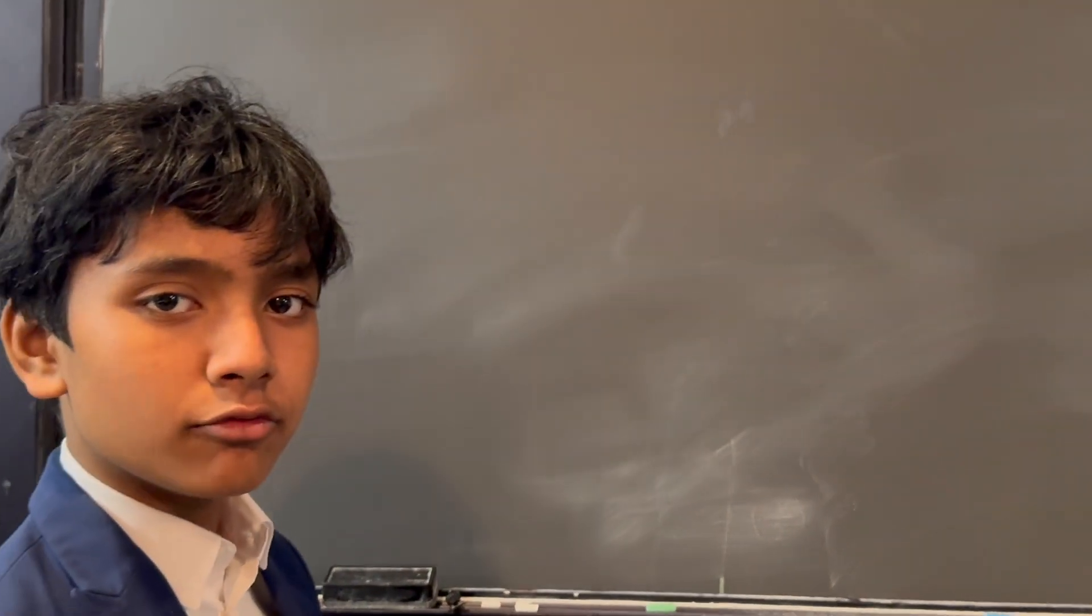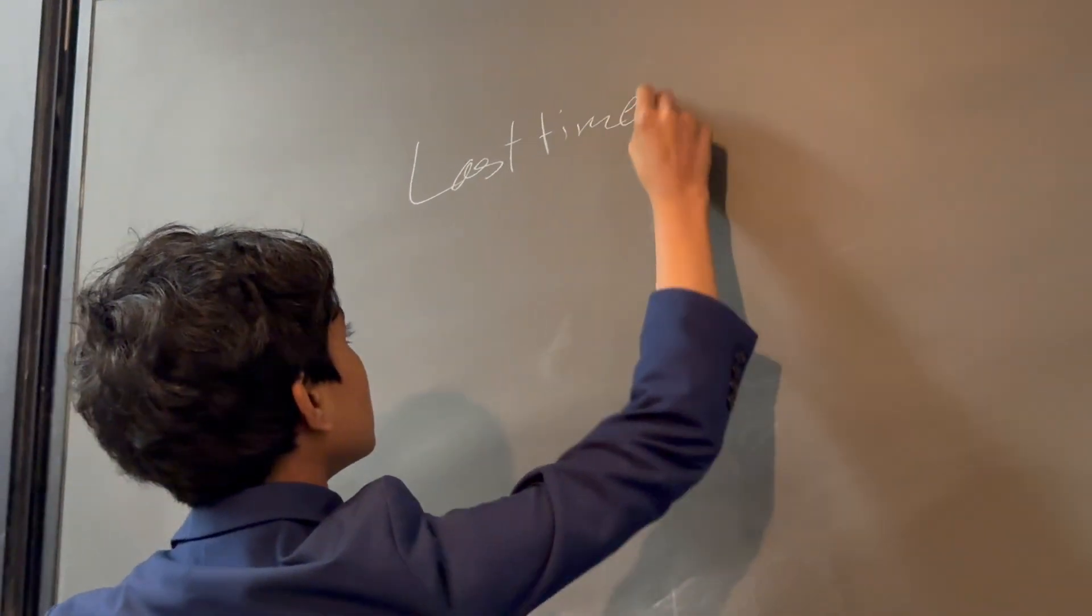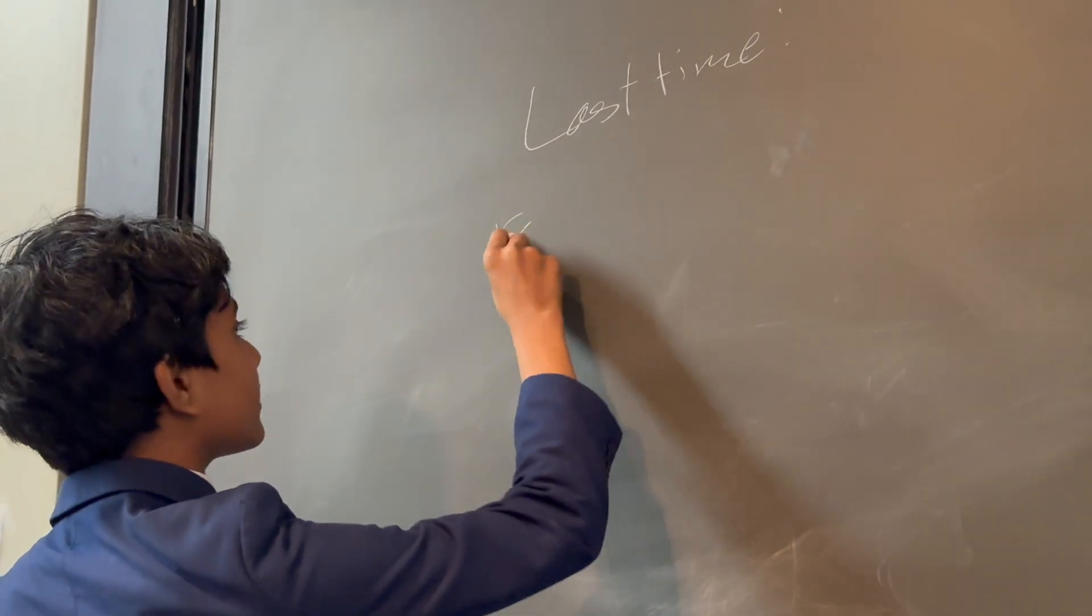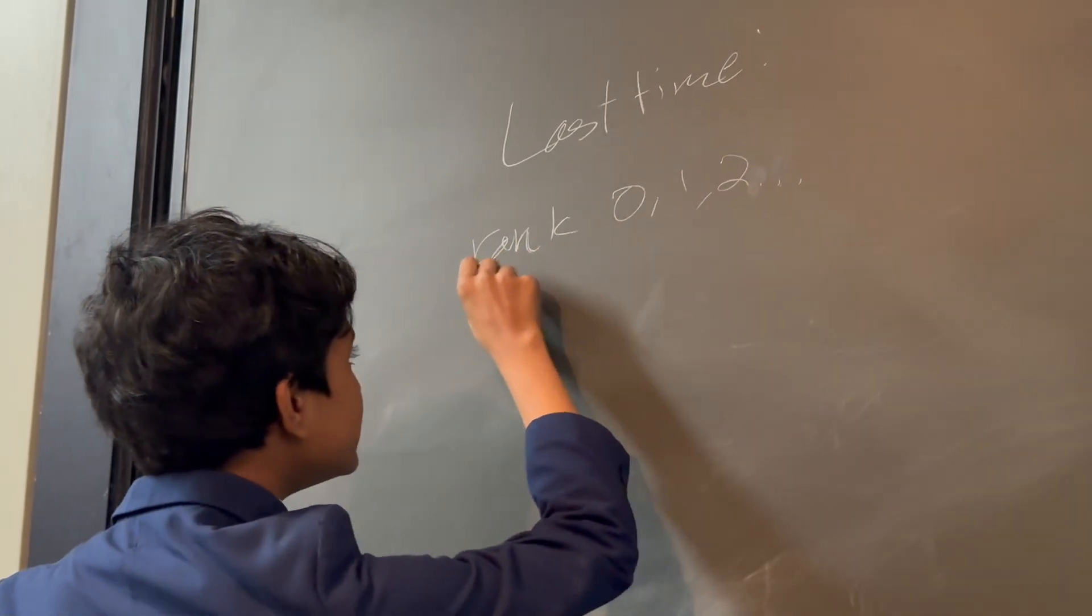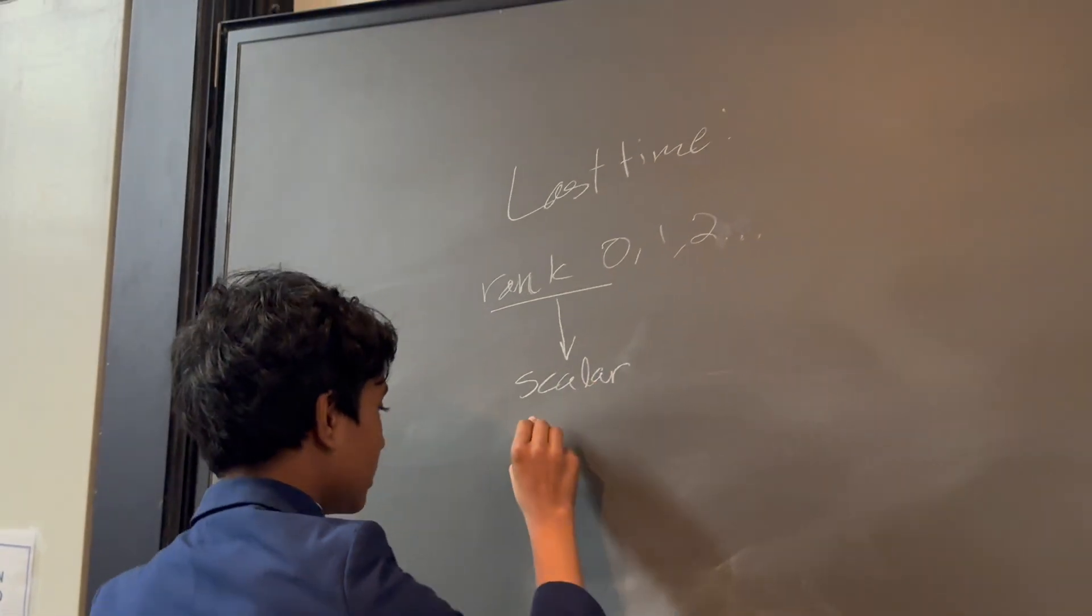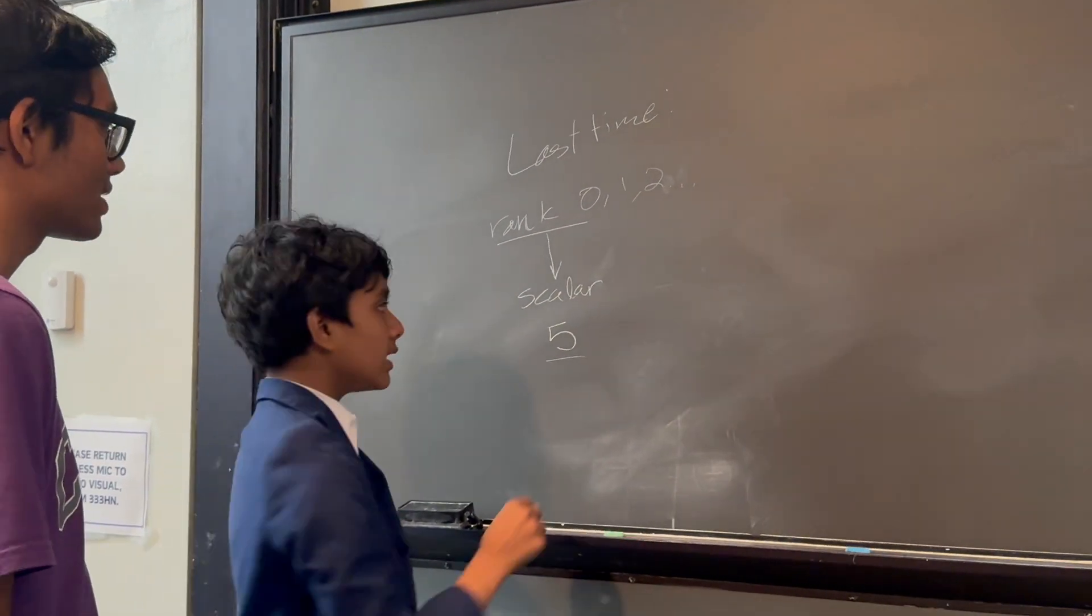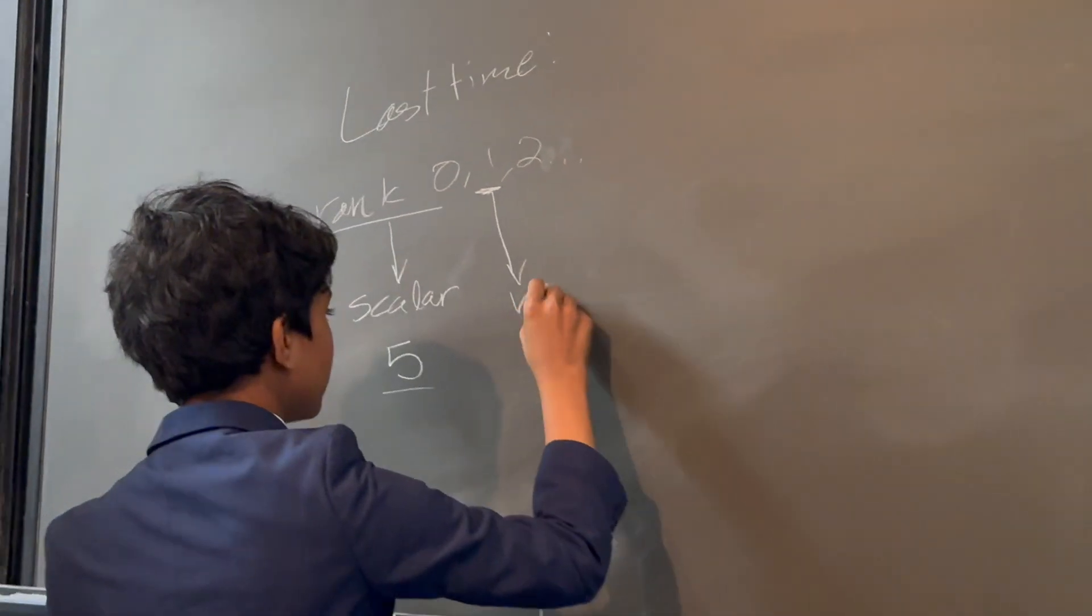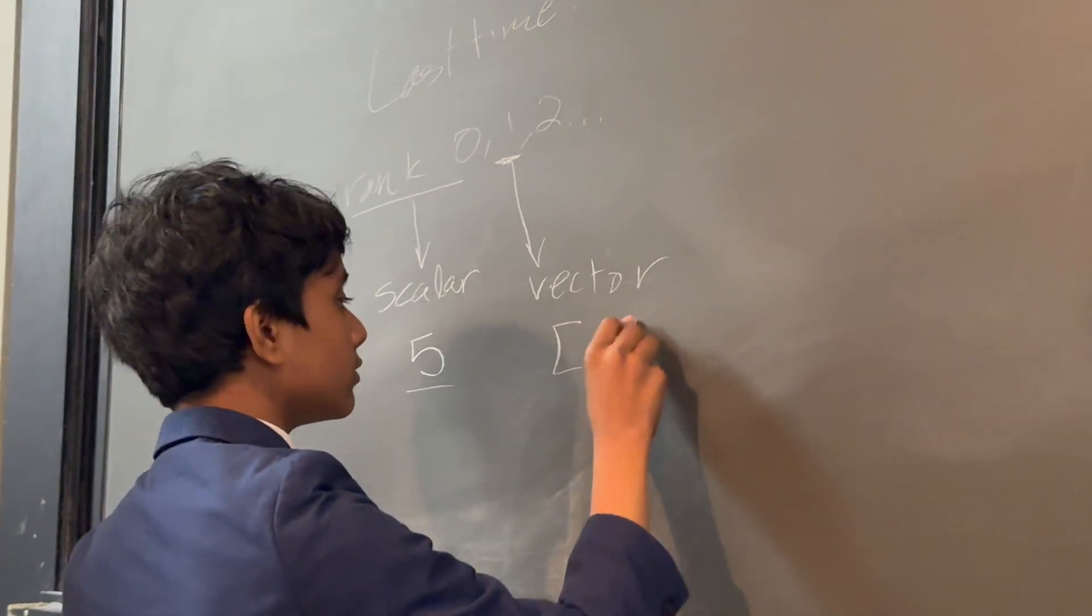All right, so let's start by summarizing what the heck did we do last time. So, we essentially define the notion of a tensor. So, a tensor can have a rank 0, 1, 2, etc. So a rank 0 tensor can essentially be imagined as a scalar. It's just one value. You don't need any indices to specify what you want to extract out of it.